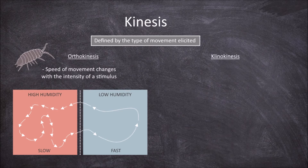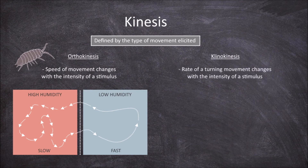Clinokinesis is the other main form of kinesis. It is the non-directional movement of an organism in which the rate of turning movement changes with the intensity of a stimulus.